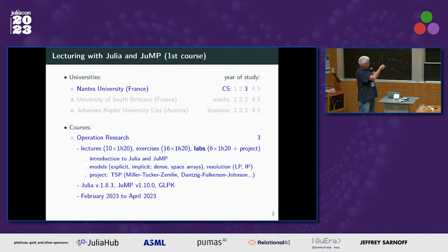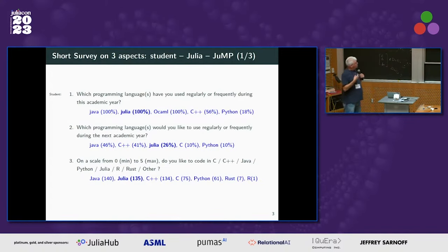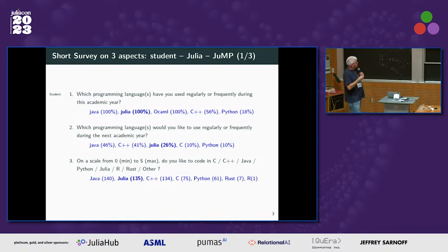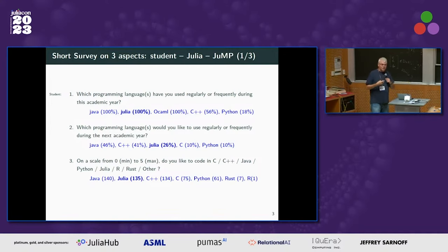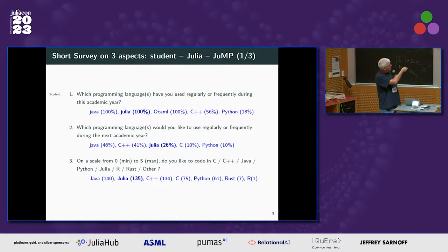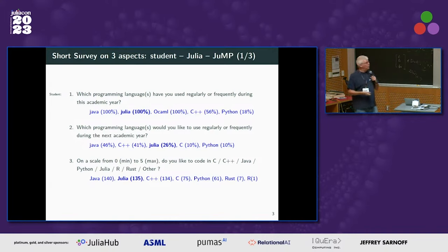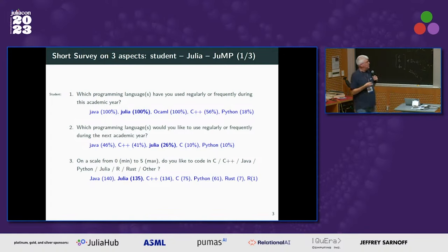This was done with Julia 1.8 during this semester. The student profile is mainly computer science students programming in Java and C++. Julia and OCaml were introduced this year. What is nice is that Julia comes just after Java and C++ in terms of the language students are ready to continue using the following year. When asked what language they would like to use, Julia arrived in second position, between Java and C++, which is very encouraging.